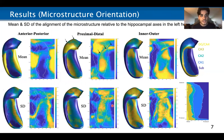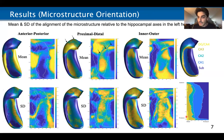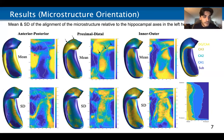Here I'm showing you the mean and standard deviation of the alignment of the microstructure relative to the hippocampal axes in the left hemisphere, plotted in folded and unfolded space. In unfolded space, we can see that microstructural orientation is highly aligned anterior-posteriorly in the body of the dentate gyrus through CA-2, and also in the body of the subiculum. Microstructure is highly aligned proximal-distally in CA-1 and in the head of CA-2 and CA-3. Finally, microstructure is highly aligned across laminae in the inner-outer direction in CA-1 and in the tail of the subiculum.